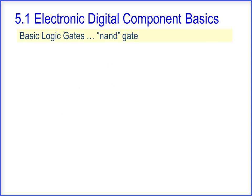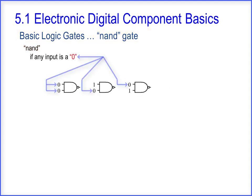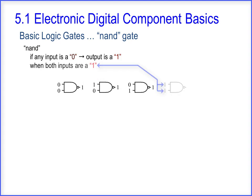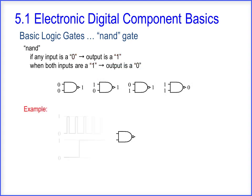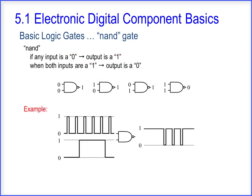For an OR gate, if any input is a 1, the output is a 1. When both inputs are a 0, the output is a 0.